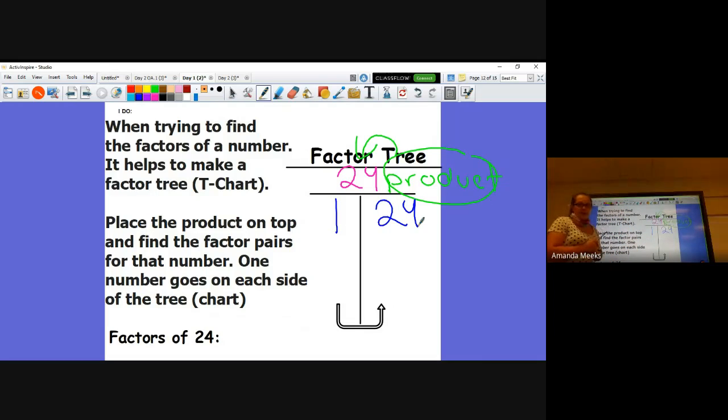You will always work this way because you can always do 1 times that number to get the product. Now I'm going to start listing all the ones that I know I can multiply. I know 2 times 12 gives me 24. I know 3 times 8 gives me 24.